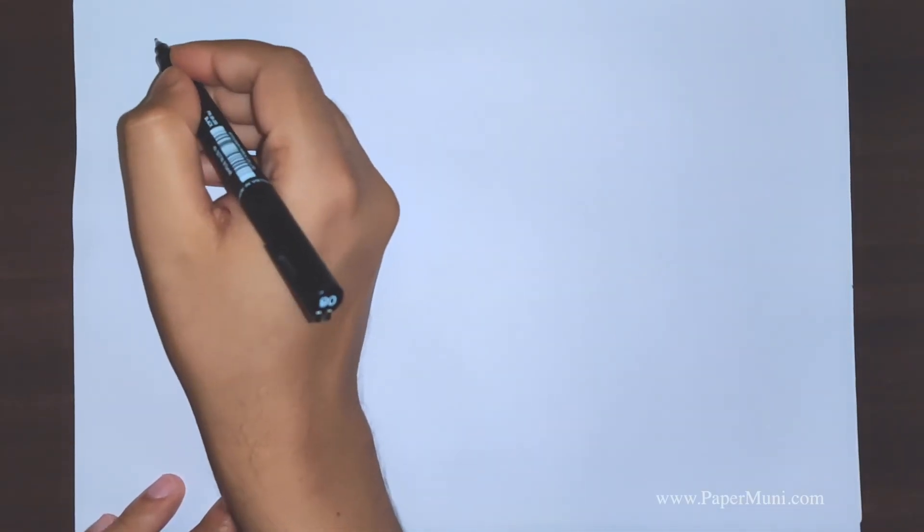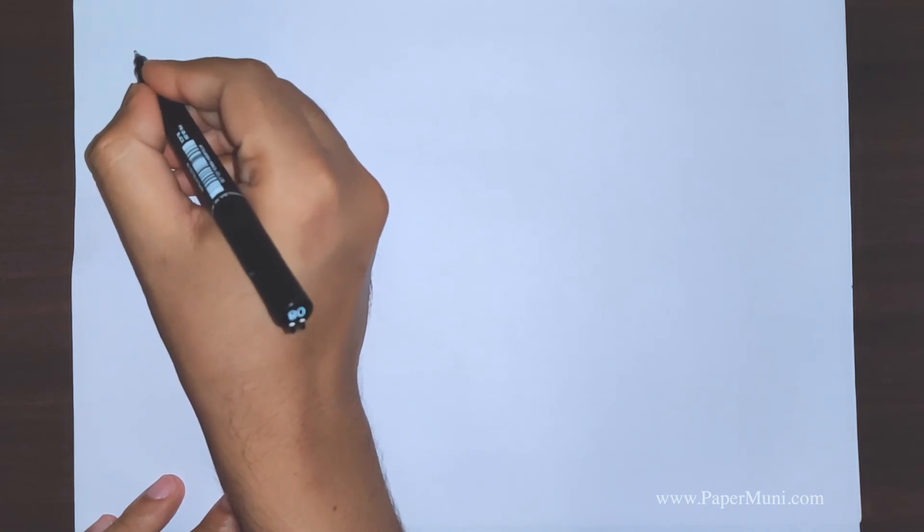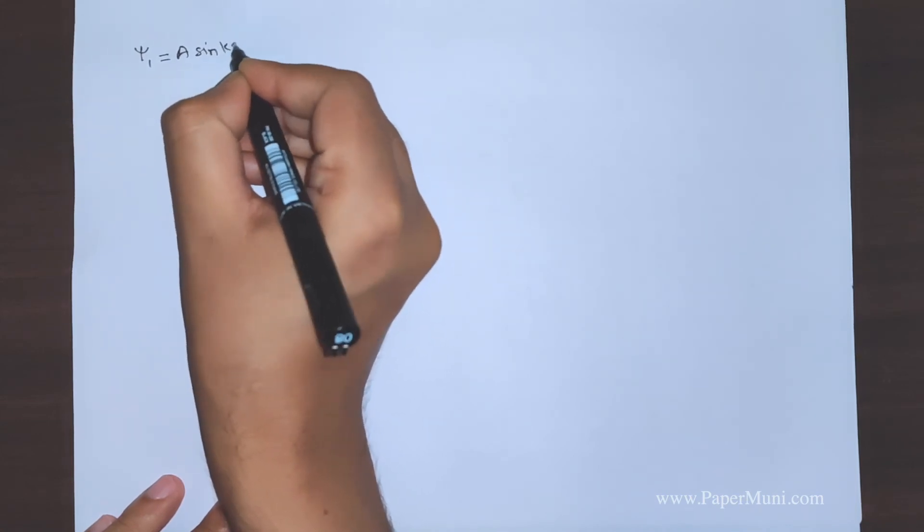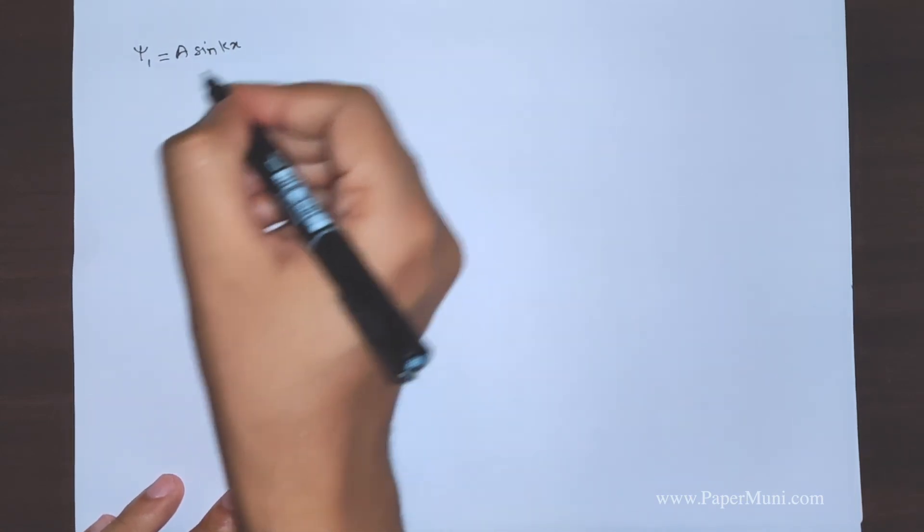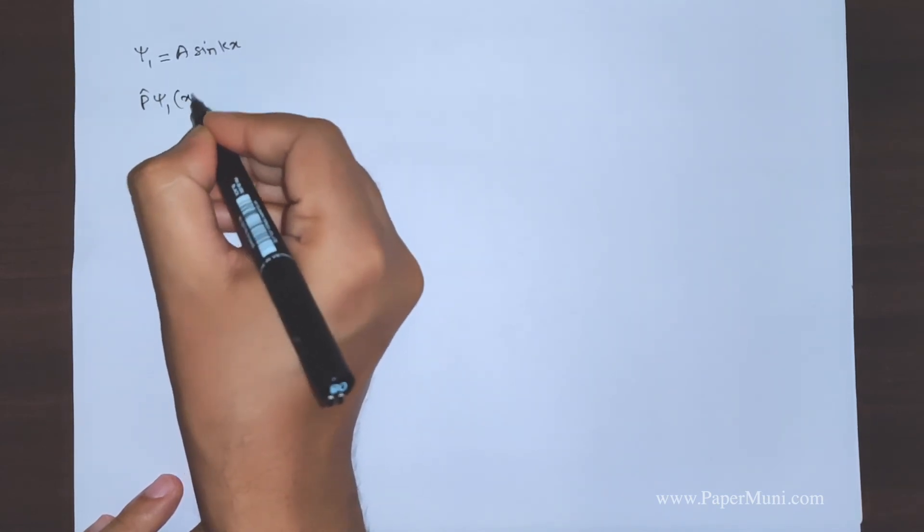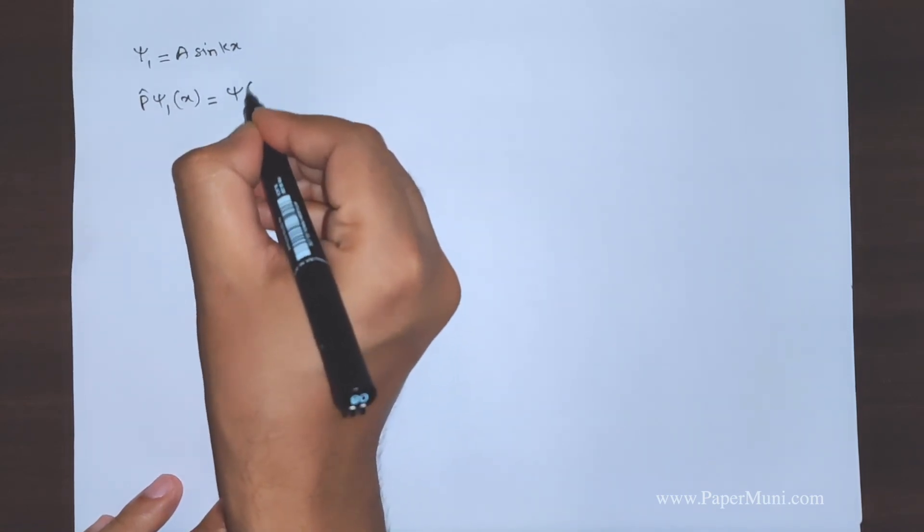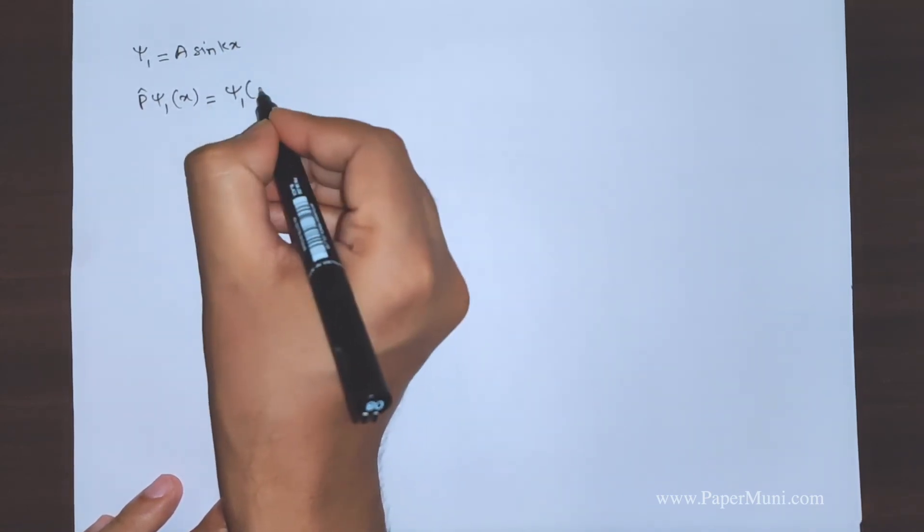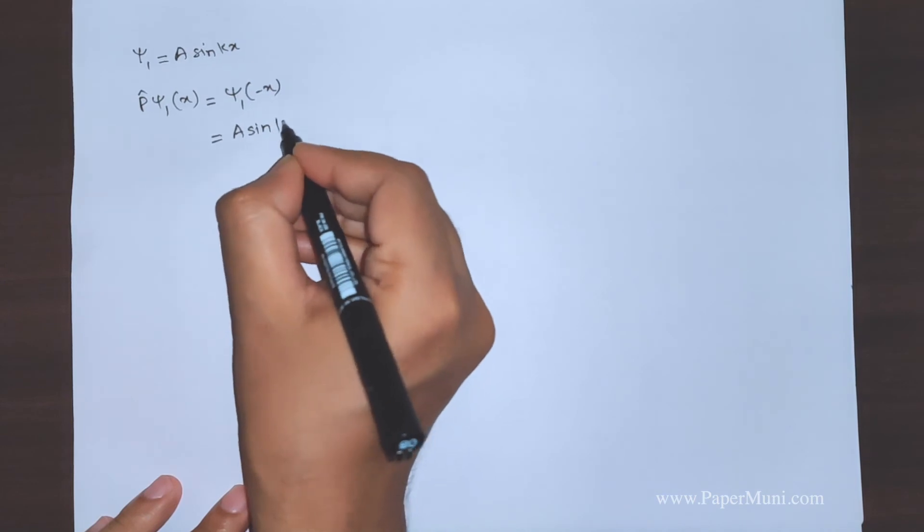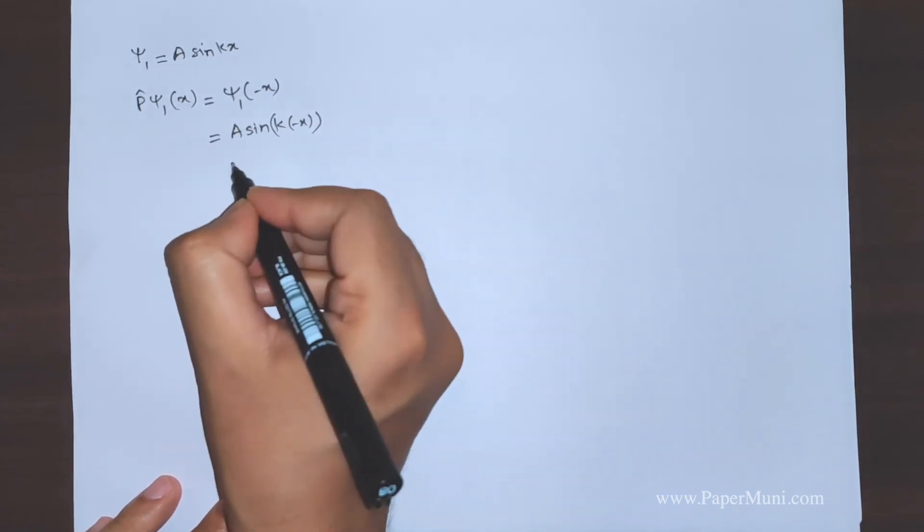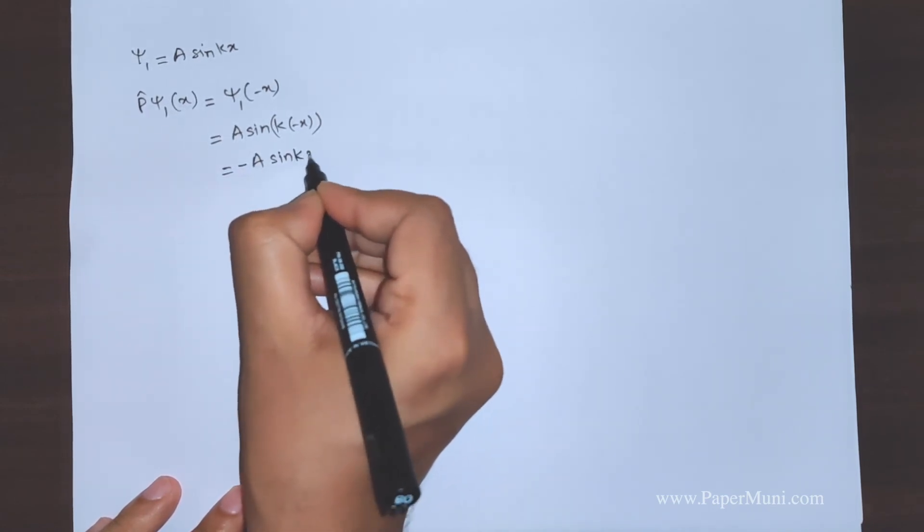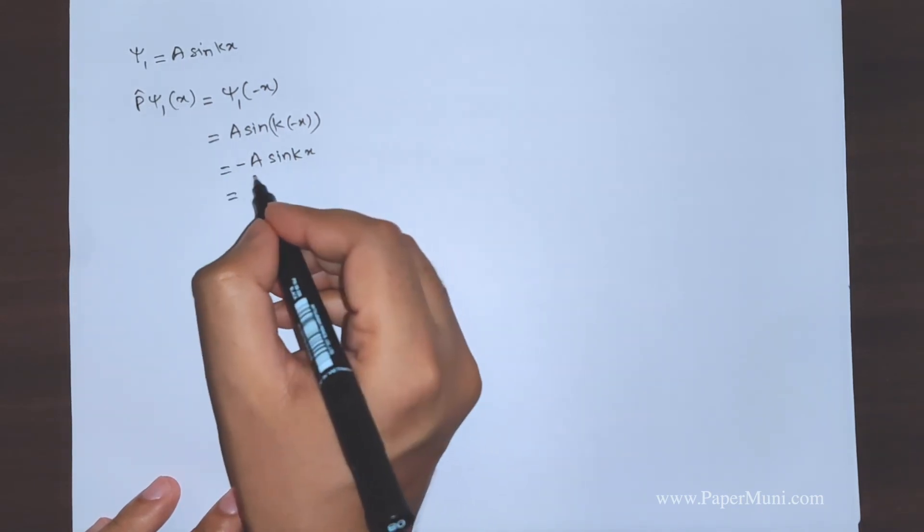We'll take a simple example to understand how the parity operator works. Say we have a function ψ₁ = A sin(kx), where A and k are constants. When we apply parity operator on ψ₁, we should replace x by minus x. When we place minus x here, what we get is sin(-x) = -sin(x). So this is the final form of the parity operation.